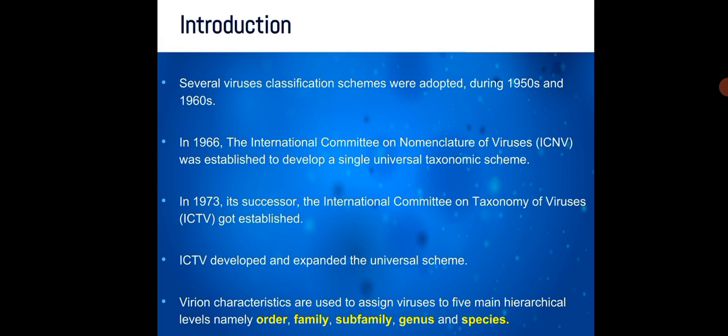ICTV developed and expanded the universal scheme in which variant characteristics are used to assign viruses to five main hierarchical levels, namely order, family, subfamily, genus, and species.